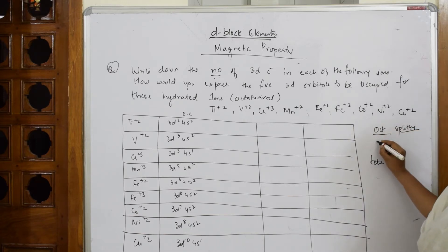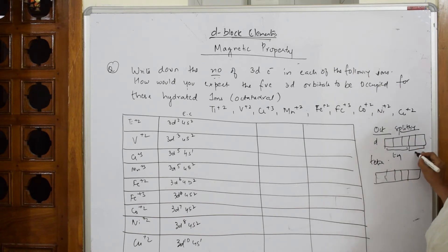How does it split? d I am very well know. It has 1, 2, 3, 4, 5. Here also. Yes. First 3 are T2G set, second 2 are EG set. Here also the same. First 3 are T2G set, the second 2 are EG set.